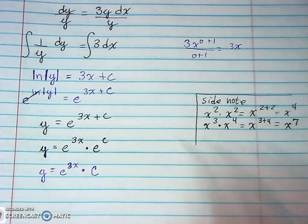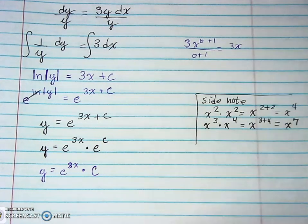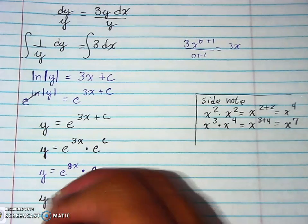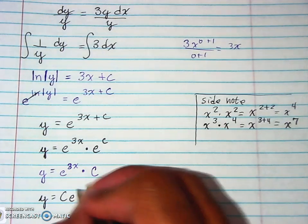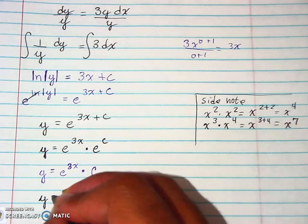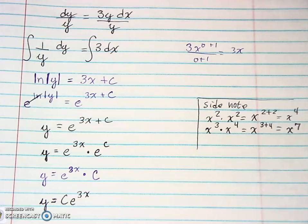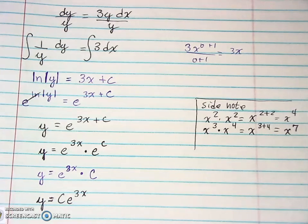So technically we have this going on and this happens every time when we have an e and a C together like that. So we're going to go ahead and change this so we have y equals C e to the 3x power. And that's because it makes it look so much easier and makes it look better.